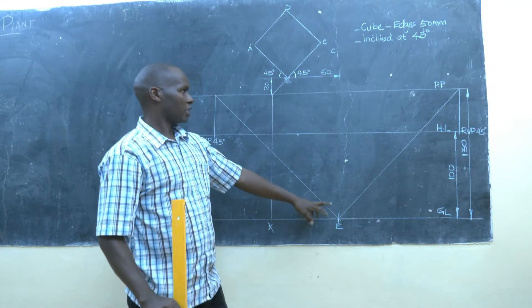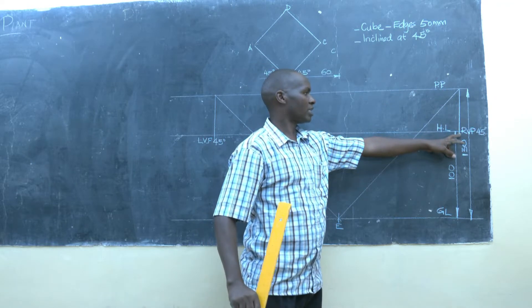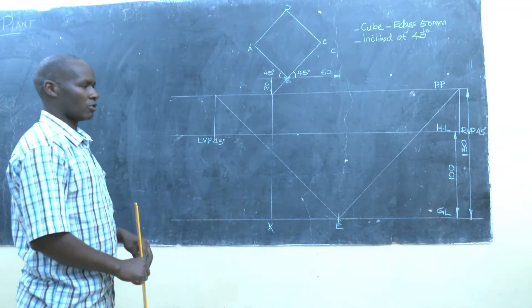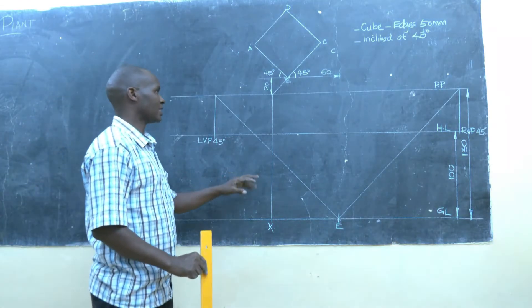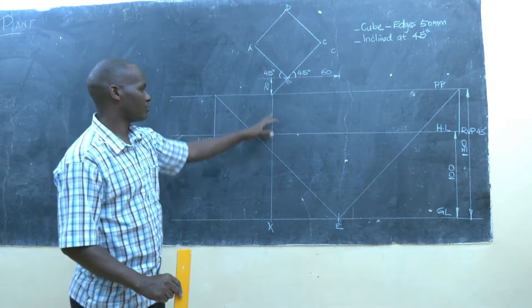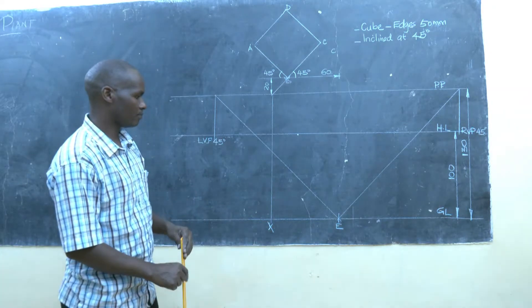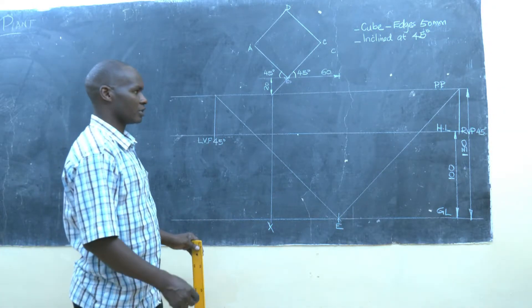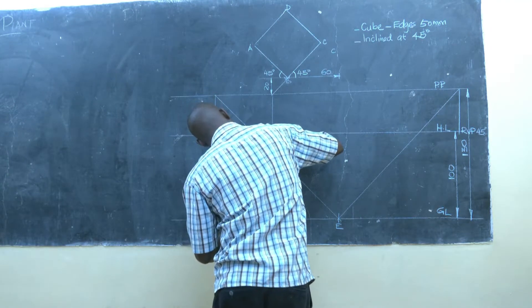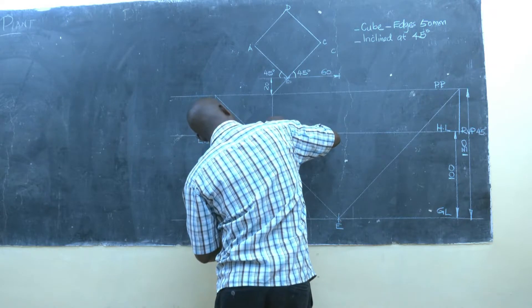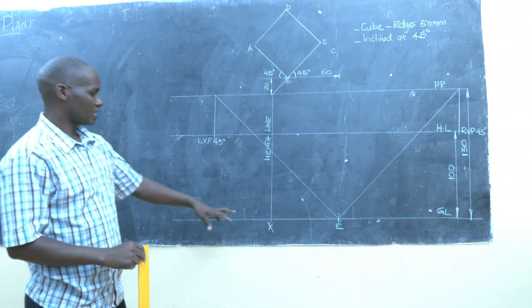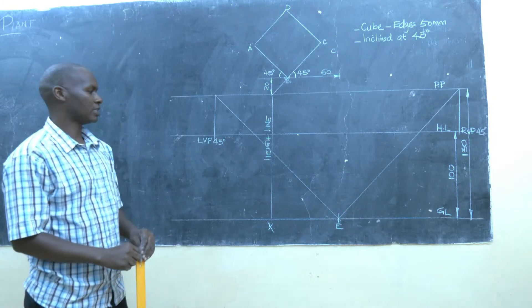We draw a line from point E to the picture plane, then we draw it vertically down to the horizon level to give us the right vanishing point. Remember earlier on we had produced line BC to the picture plane and then dropped it vertically down to the ground level — that line is what gives us the height line, which we use to measure the height of the cube.